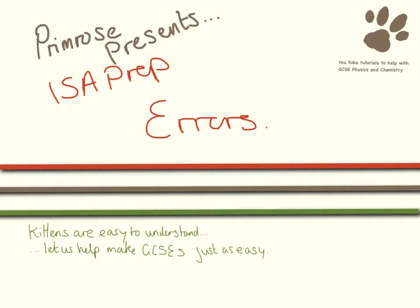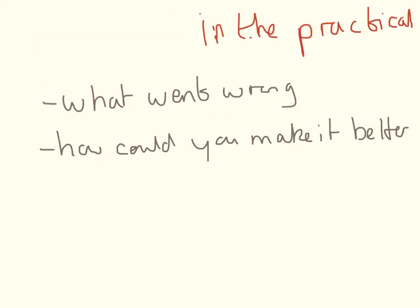This is another video to help you prepare for your ISA. Here we're going to be looking at different types of errors. You may get a question that asks you to think about errors in your practical. If you haven't thought about this before you sit down to do your section 2 paper, it can require quite a lot of thought and it may throw you. So while you're doing your practical, just keep in the back of your mind: has anything gone wrong? How could we improve this? How could we make it better?